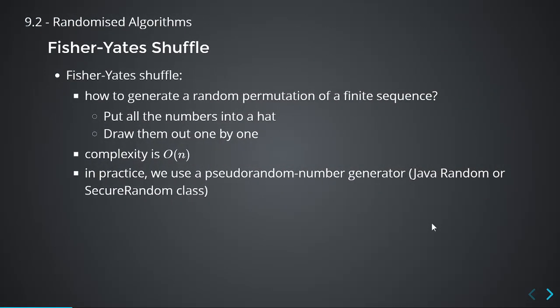The bad news is that when we randomize, it's normally O(n). There's something very simple called the Fisher-Yates Shuffle to generate a random permutation on a finite sequence — you can look this up on Wikipedia. Basically, what they say is just put all the numbers in a hat and draw them out one by one. That is actually an algorithm called Fisher-Yates Shuffle.